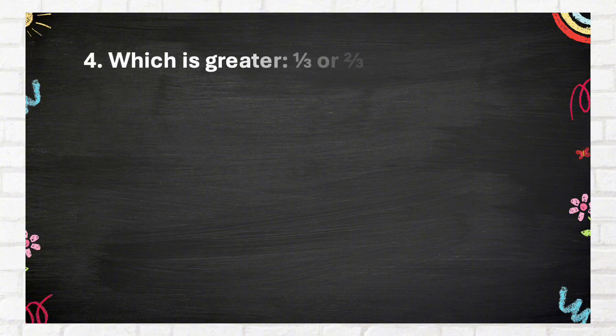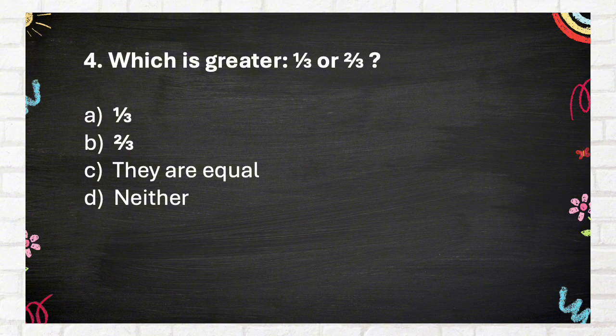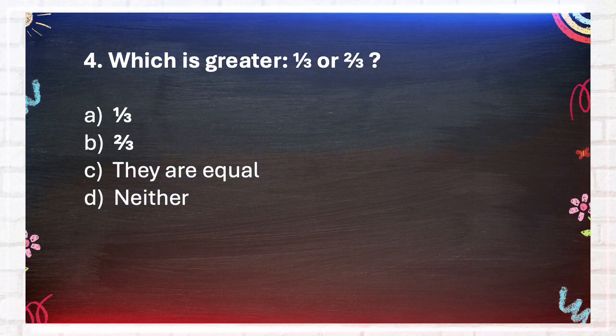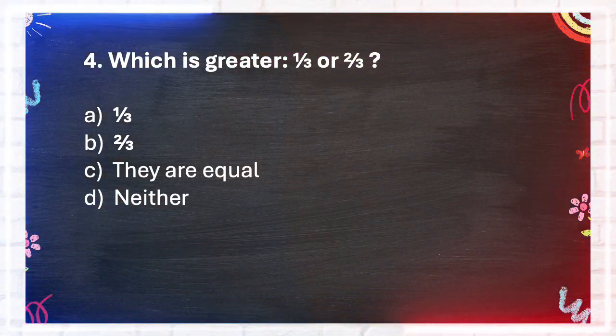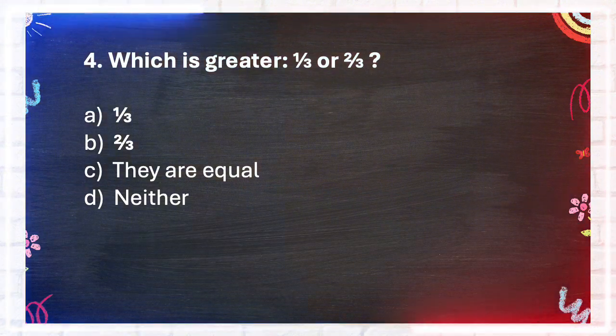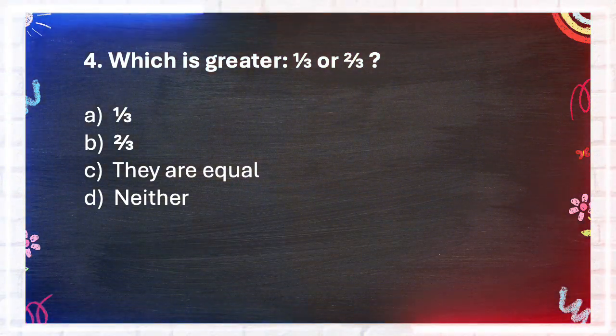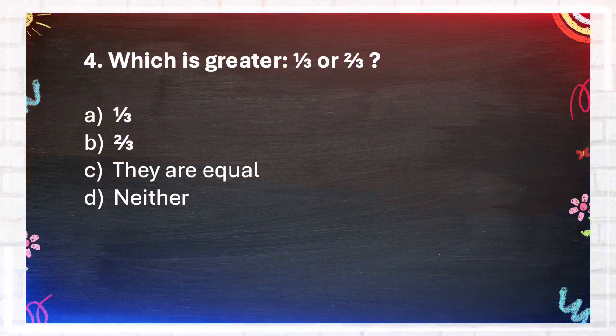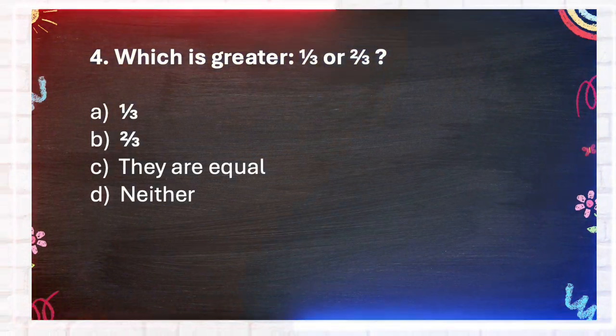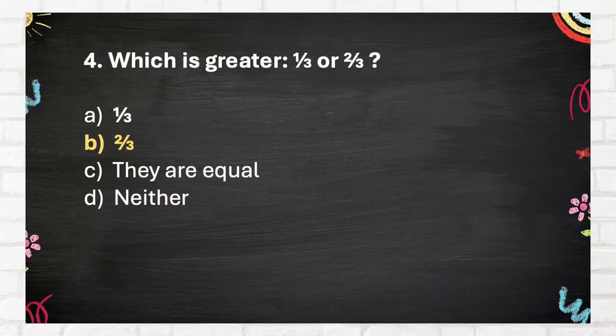Question number 4. Which is greater, one-third or two-thirds? A one-third, B two-thirds, C they are equal, D neither. The answer is B, two-thirds.